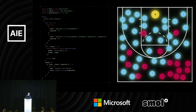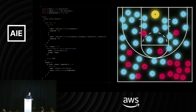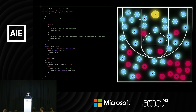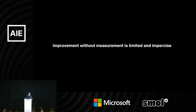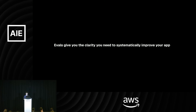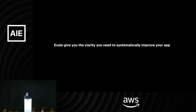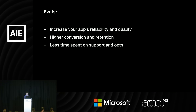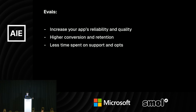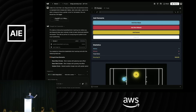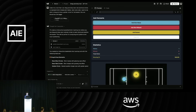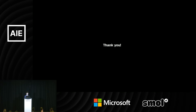Going back — here's the summary. You want to make evals a core of your workflow and treat it like practice. When you switch models, you can see how a different player performs in practice. This gives you a great understanding of how your system is doing when you change things like RAG or your system prompt. You can go to your colleague and say: 'hey, this actually did help our app' — because improvement without measurement is limited and imprecise. Evals give you the clarity you need to systematically improve your app. When you do that, you'll get better reliability and quality, higher conversion and retention, and spend less time on support ops. I actually built all these court diagrams using V0. Thank you very much — I hope you learned a little bit about evals.